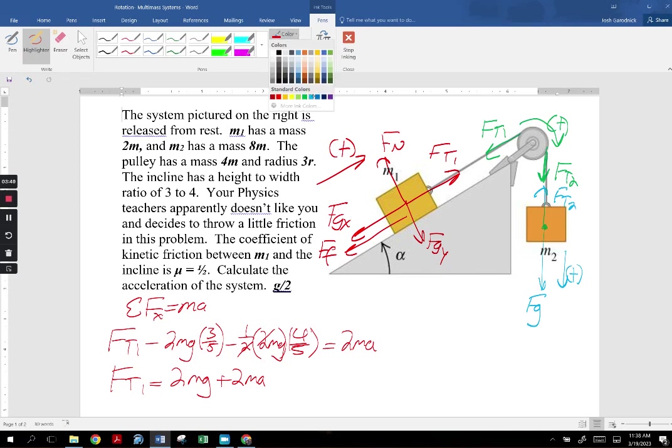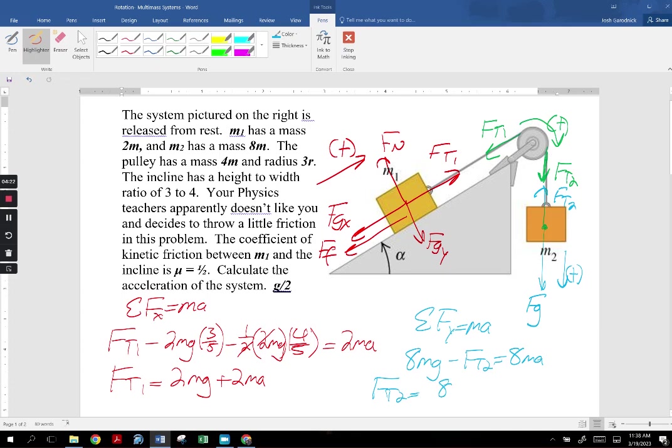We move on to the hanging mass, which is going to be moving down. So we said down is positive. Sum the forces. I think at this point in the year, we know that the accelerations are the same, and so we just call them A. The hanging mass has a mass of 8M, so we have 8MG acting down, and down is positive. Minus FT2 equals 8MA. If I isolate for FT2, I get 8MG minus 8MA.